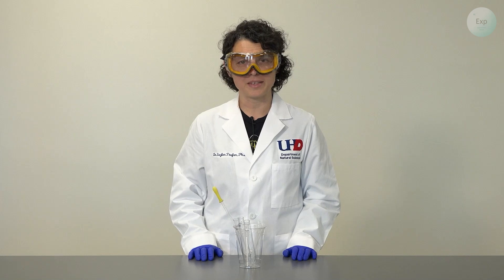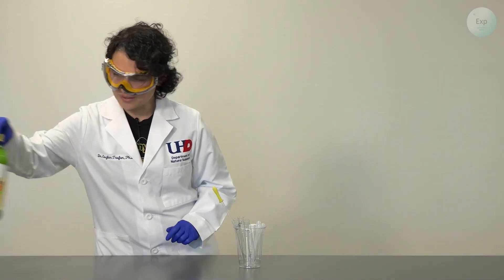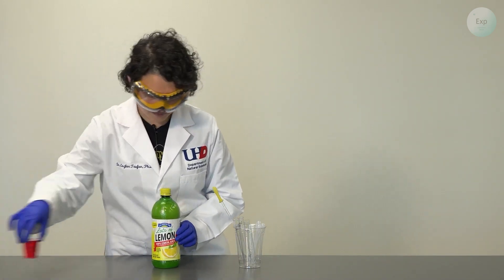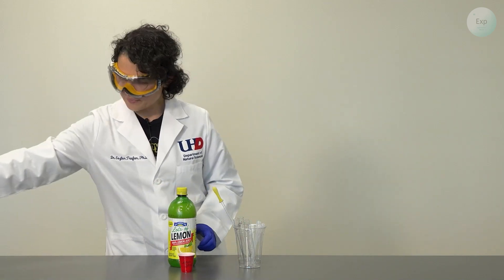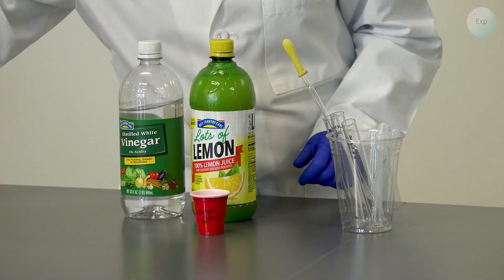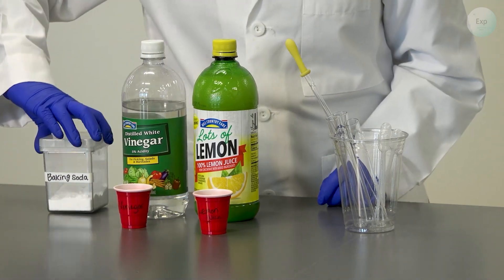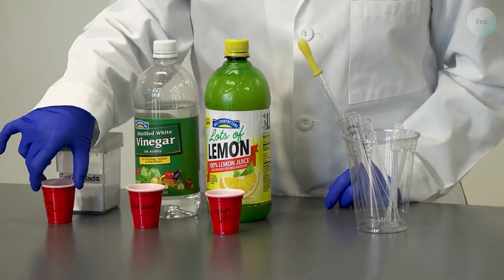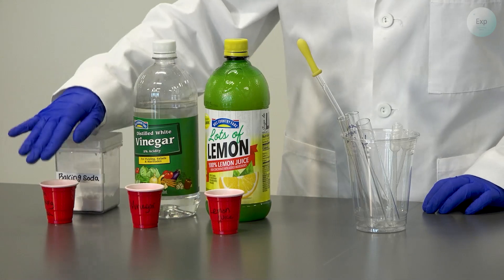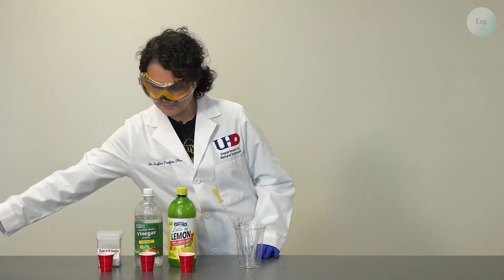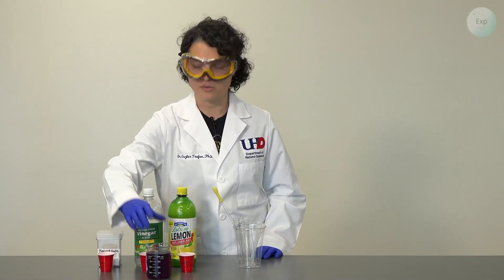Now for the materials that I will be testing today. First I'm going to test some lemon juice and I transferred some of it into this cup. I'm also going to test some vinegar and I transferred some of it in this cup, and I will test baking soda which I dissolved in some deionized water in this third little cup. And then finally I need my indicator solution.